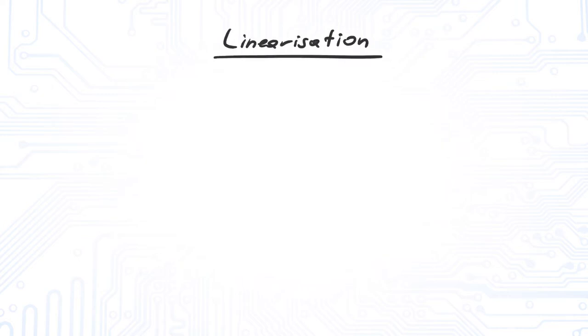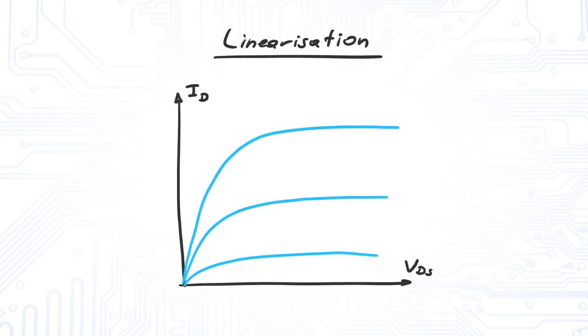The linearization of a transistor is performed around its operating point. If we move around this point just a little, we can replace the non-linear characteristic with a linear function, as shown here for the output characteristic.